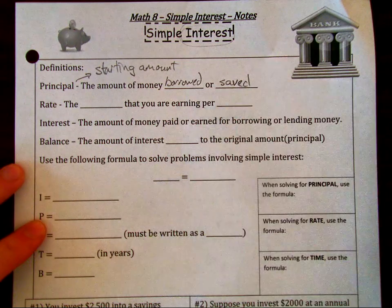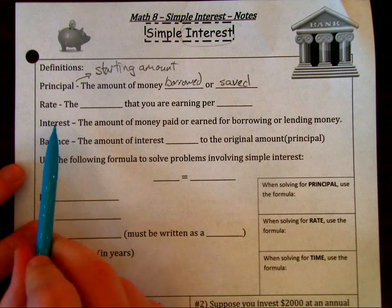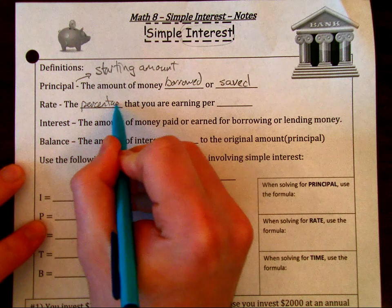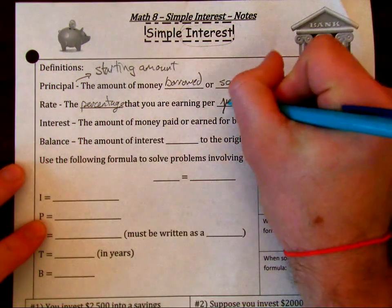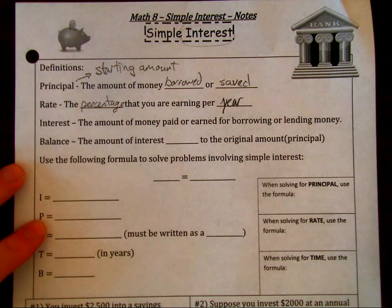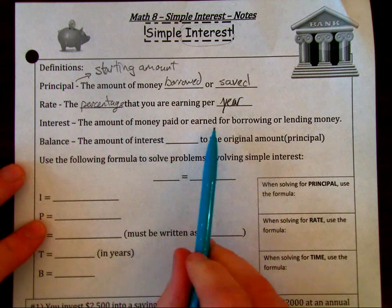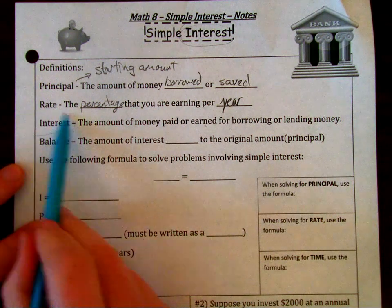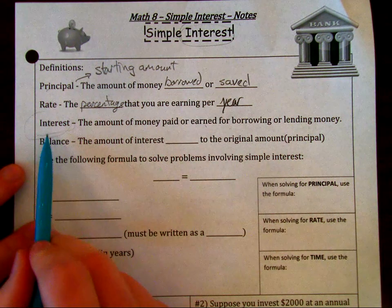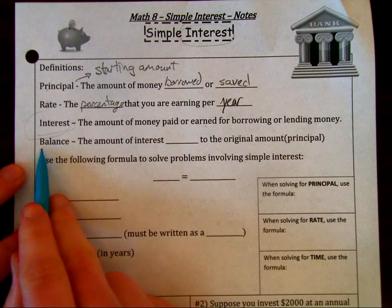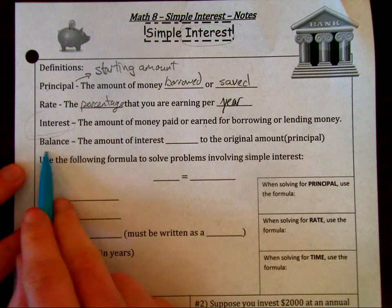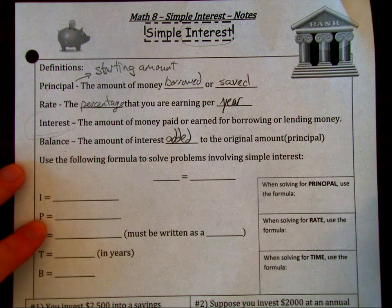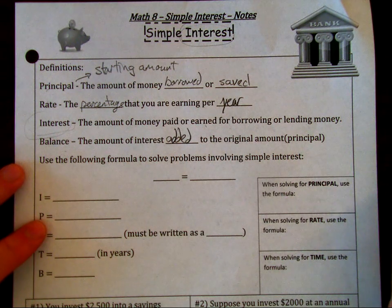The rate is going to be that percentage that you're earning per year. The interest is the amount of money paid or earned for borrowing or lending money. That's what we're mainly going to be solving for, but we should be able to solve for any of these. The balance is going to be the amount of interest added to the original amount.